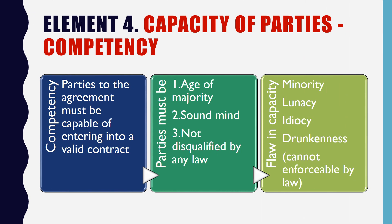Element 4: Capacity of Parties. Both the parties — the offerer and the acceptor — must be capable of entering into a valid contract. This is also known as competency of parties. When the parties satisfy three conditions — age of majority, sound mind, and not disqualified by any law — they have the eligibility to enter into a valid contract. If there is a flaw such as age of minority, lunacy, idiocy, unsound mind, disqualification by law, or drunkenness, then the agreement cannot be enforceable by law and a valid contract cannot be created.